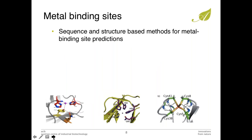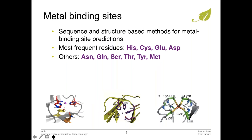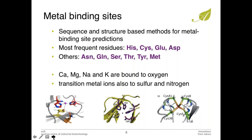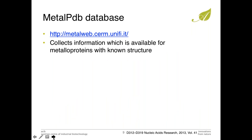Concerning metal binding sites, they are defined via structure and sequence and there are programs available to detect them. Most frequently, histidine, cysteine, glutamate, and aspartate bind the metal, but other amino acids can also be involved. Some metals are mainly bound to oxygen, but transition metals are also bound to sulfur and nitrogen. There is a MetalPDB database where you can look for metal proteins, their structures, and data related to the metal, including coordination of the metal to the protein.